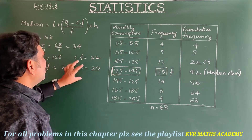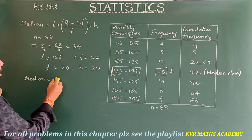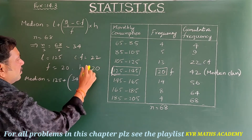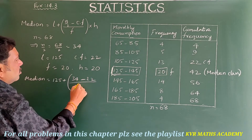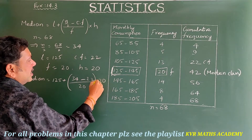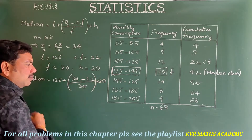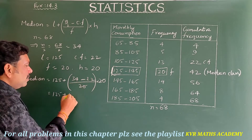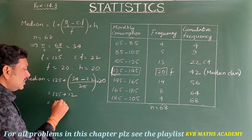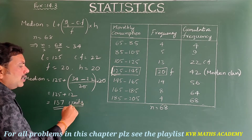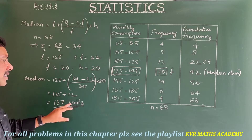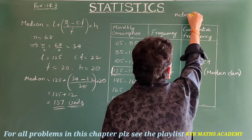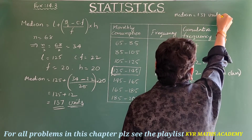Substituting into the formula: Median = 125 + (34 − 22) / 20 × 20. The 20 in numerator and denominator cancel, giving 125 + 12 = 137. So the median is equal to 137 units.